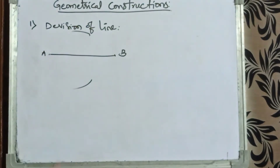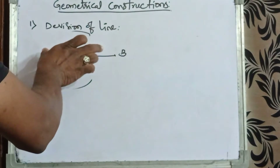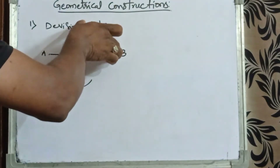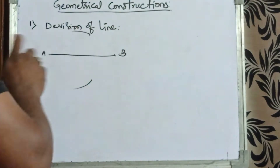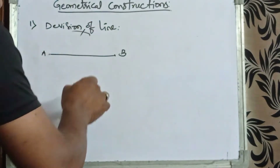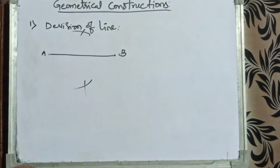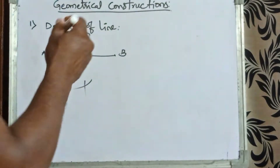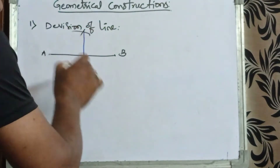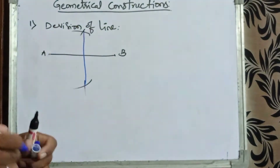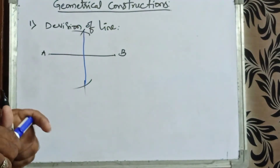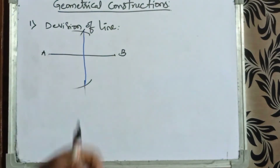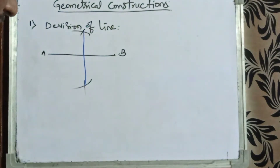With the same radius, keep B as the center and cut the two arcs. Now join these two intersection points by a straight line. So easily we can bisect the line into two equal parts.